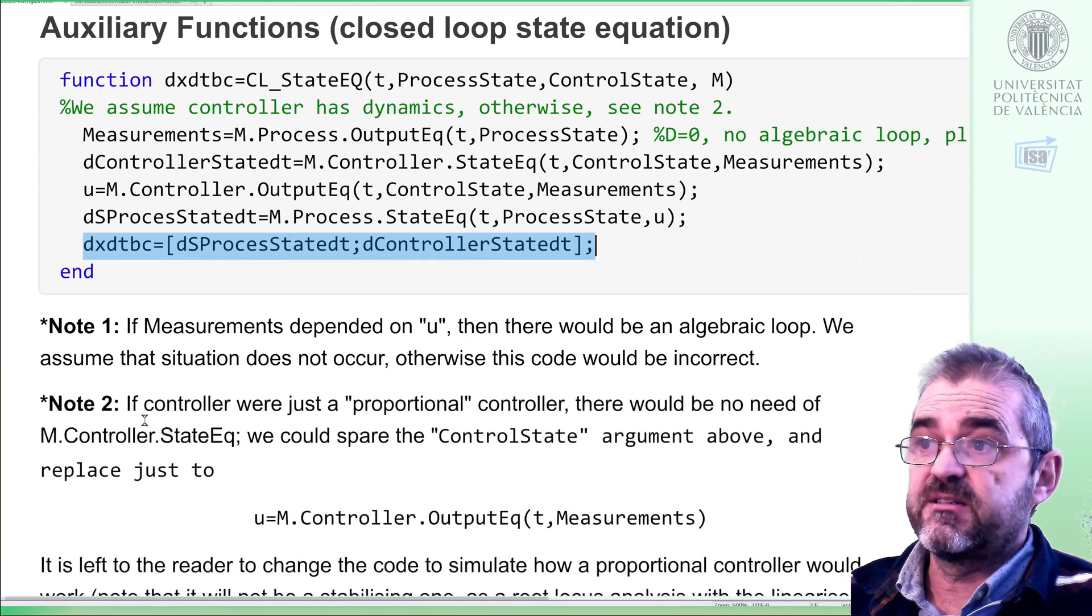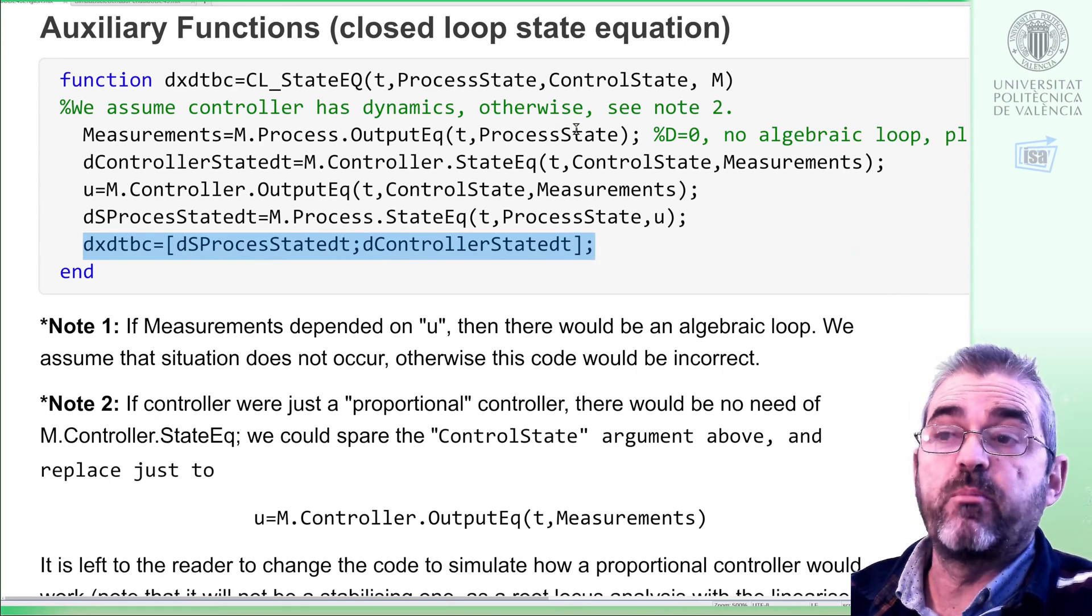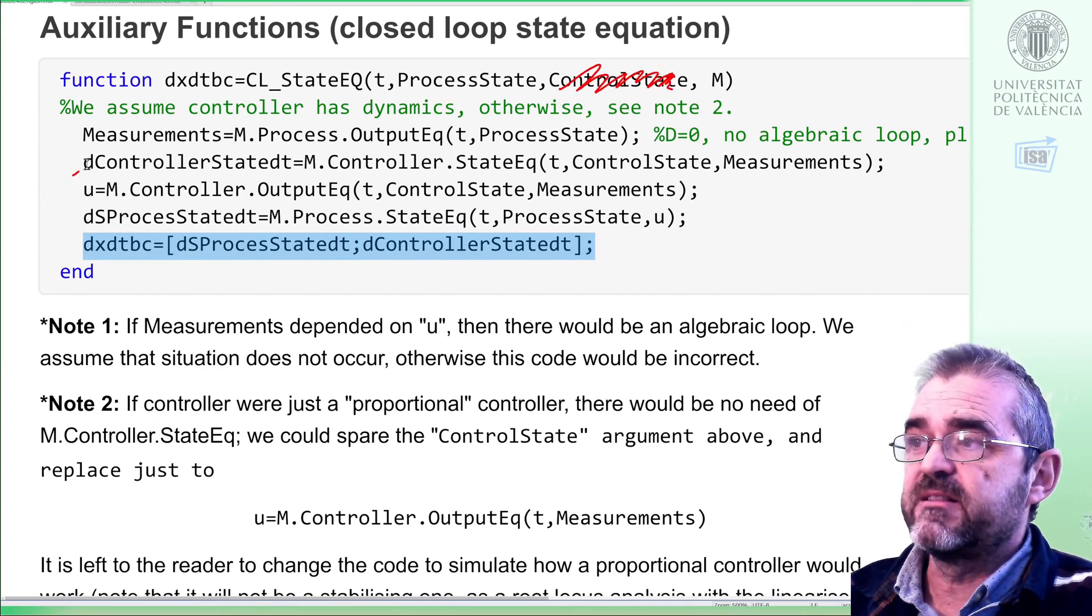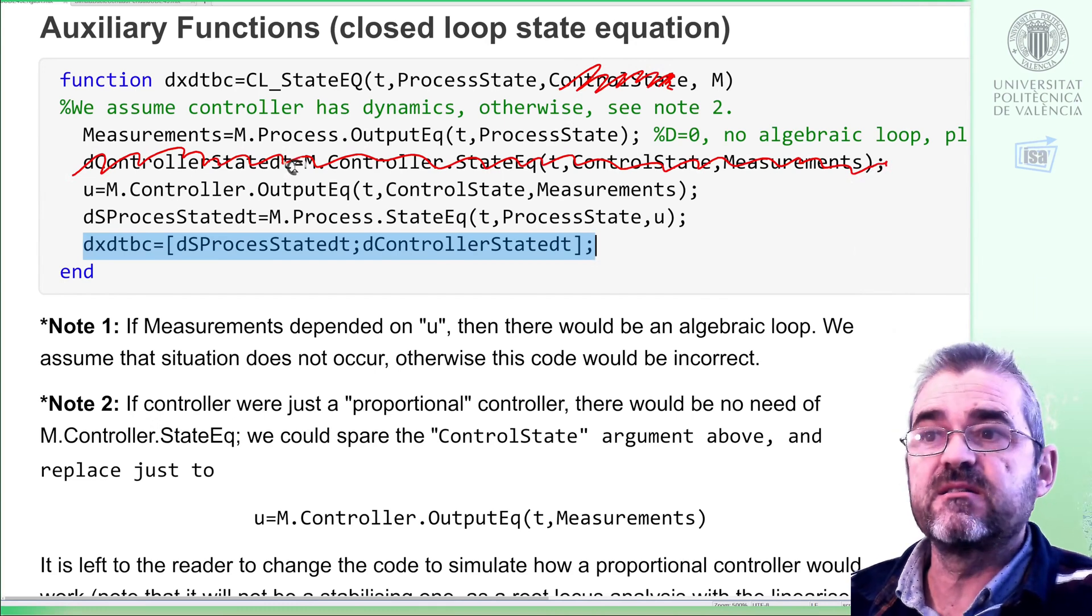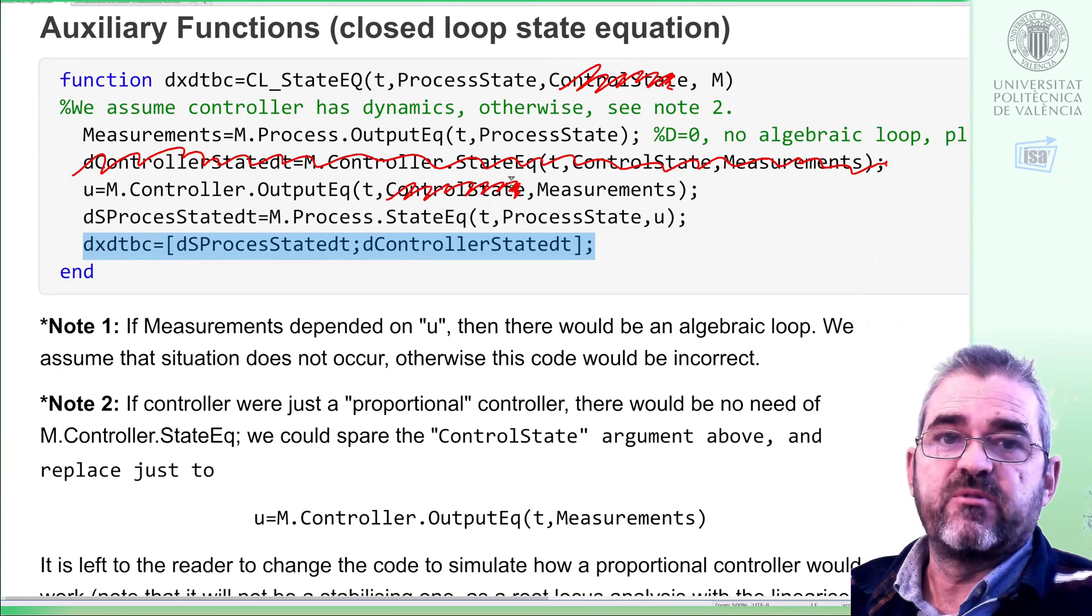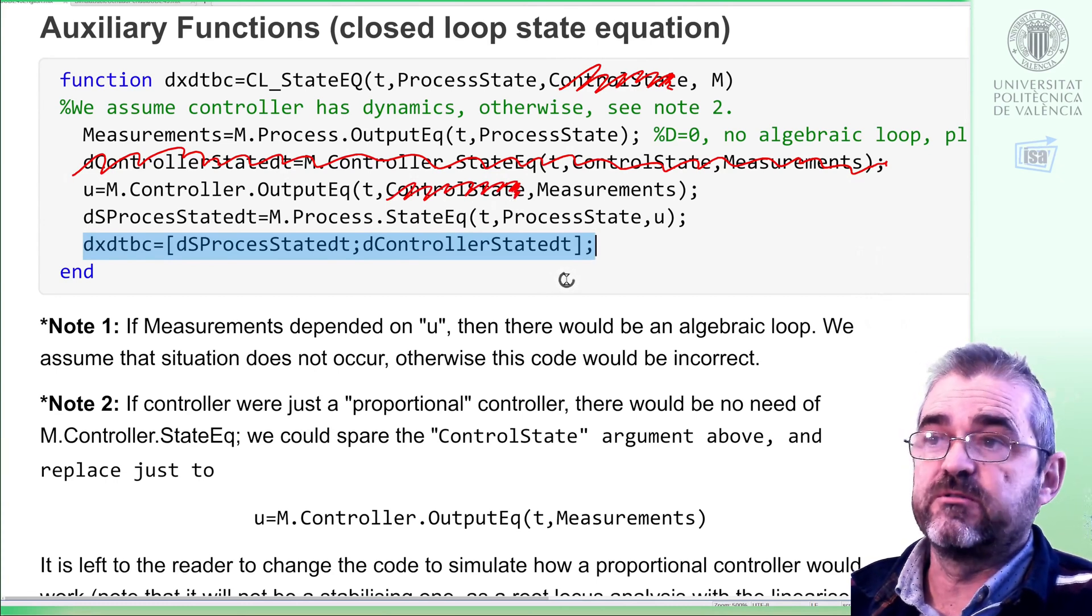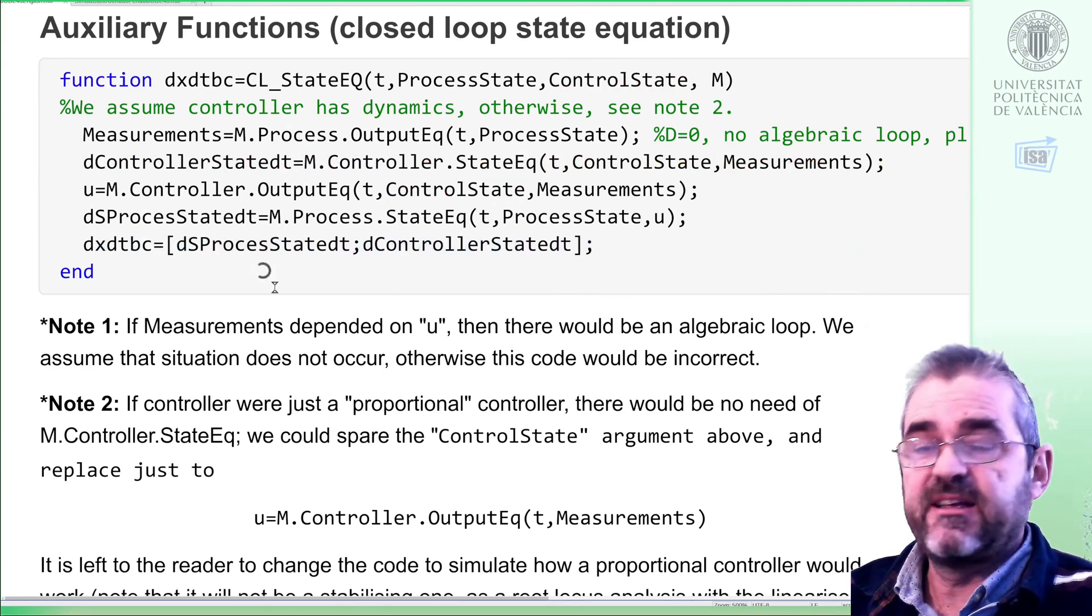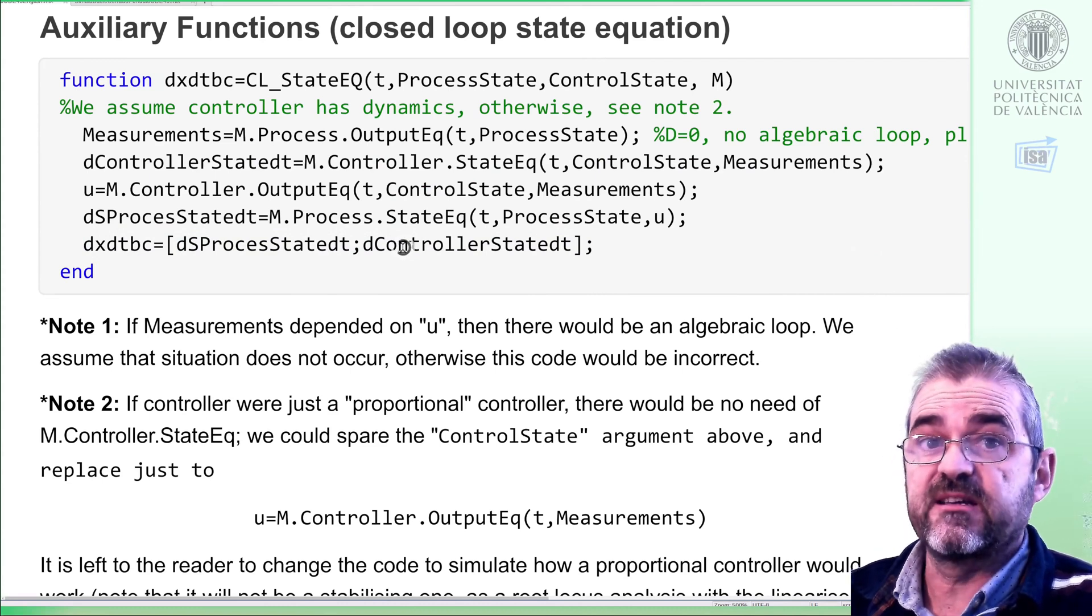Second note is that if the controller had no state, for instance if the controller is plainly a proportional control, then I would not have control state, and I would not need to compute any derivative of the non-existing controller state. I would not need this argument. So this will be the code needed to implement a proportional controller. In this case, we have a controller state, so we will keep it like this, and now we are in conditions to execute the simulation.